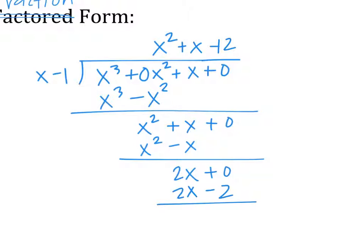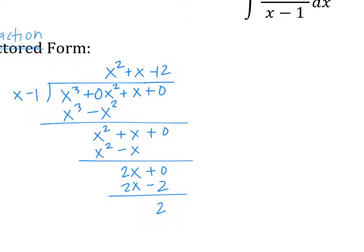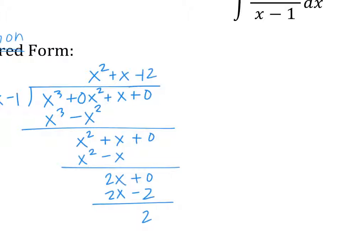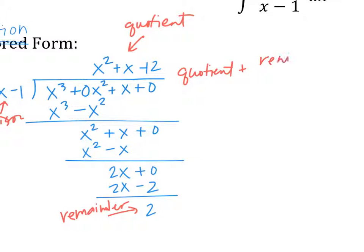2X plus 0 minus 2X minus 2 is 2. Now what you do is rewrite this in fraction form. Let's make a note: this is called a quotient — the answer to a division problem. This part is called a remainder. This part is called a divisor. So the way you write it is: quotient plus remainder over divisor.